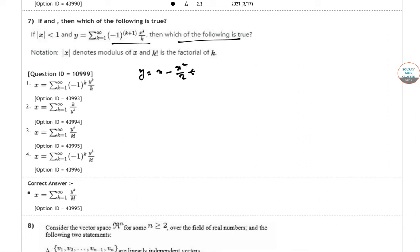x square plus 2x cube by 3 minus this goes to infinity. So y equals log of 1 plus x. So 1 plus x equals e to the power y. Therefore x equals e to the power y minus 1.